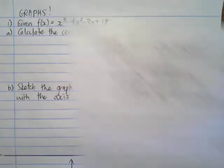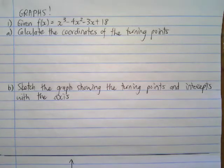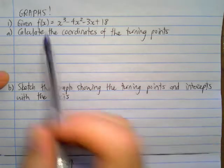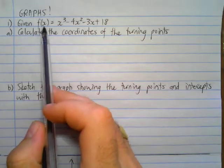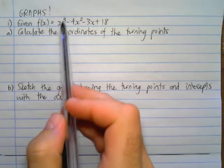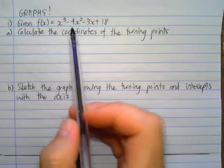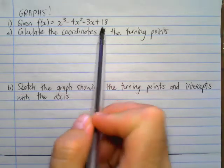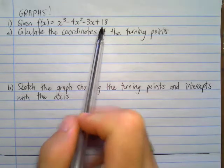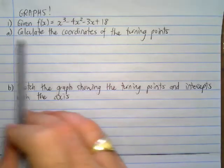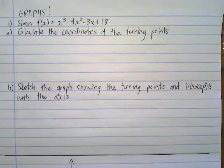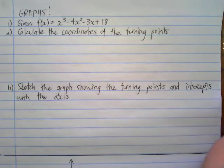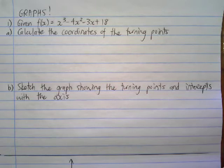I've prepared two questions that I'm just going to work through with you. The first one says: given that f(x) is equal to x cubed minus 4x squared minus 3x plus 18. Firstly, calculate the coordinates of the turning points — something you'll have to work out in just about every calculus graph question.